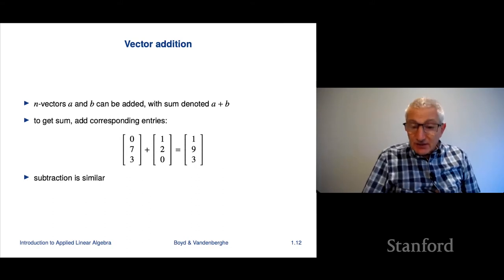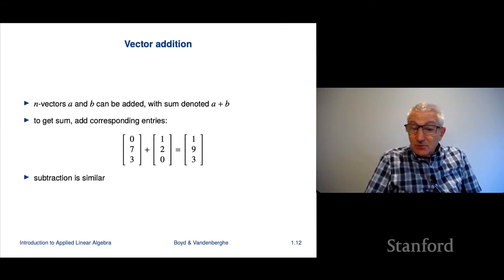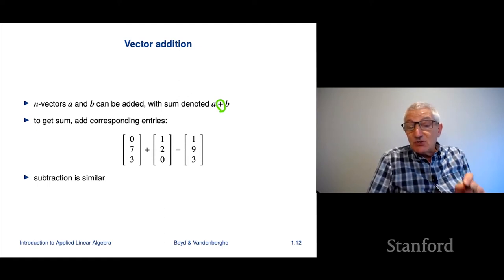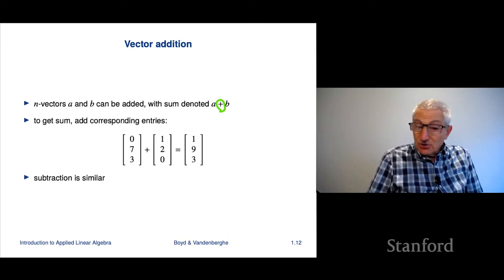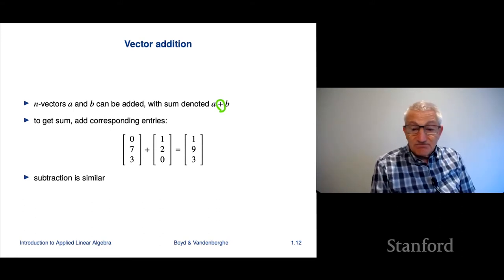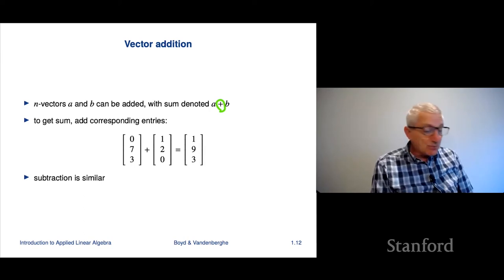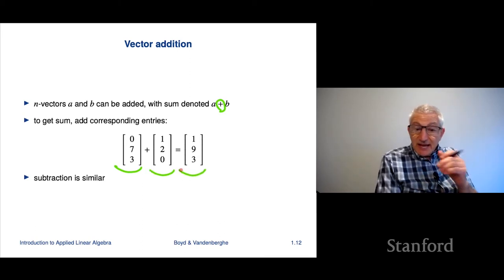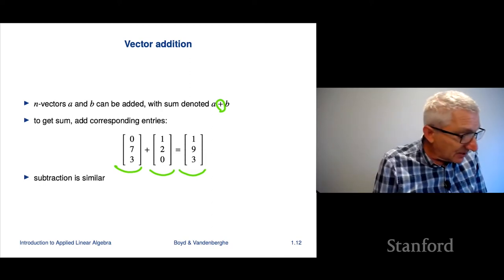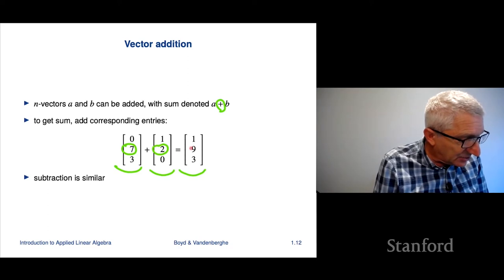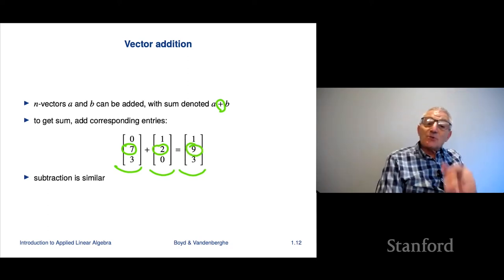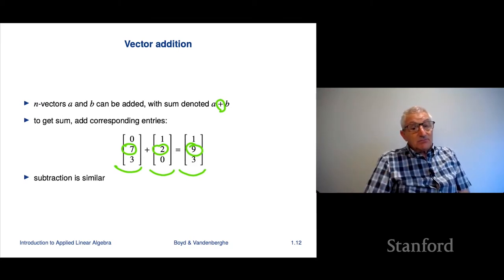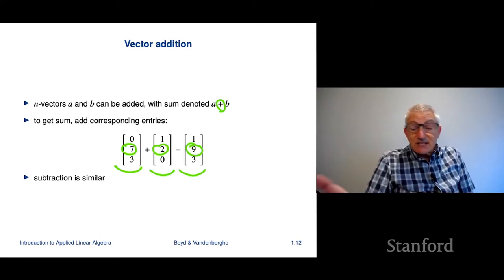Vector addition: if you've got two vectors of the same size, you can add them, and we're going to heavily overload the notation — we're just going to use the same old plus that you'd use to write 2+3. So when plus appears between two vectors, it's really referring to vector addition, not the addition of two numbers. The way you do it is pretty straightforward: you just add the corresponding entries. Here's an example with two 3-vectors — you get their sum by going entry by entry. For the second entry, we add 7 and 2 and get 9. You can also subtract vectors.